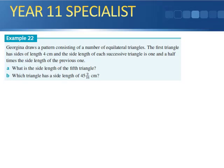Example 22: Georgina draws a pattern consisting of a number of equilateral triangles. The first triangle has sides of length 4 centimeters, and the side length of each successive triangle is 1 and a half times the side length of the previous one. What is the side length of the fifth triangle? So we know A equals 4, that's our starting point, and we know that R is going to be 1 and a half times, so 3 on 2.